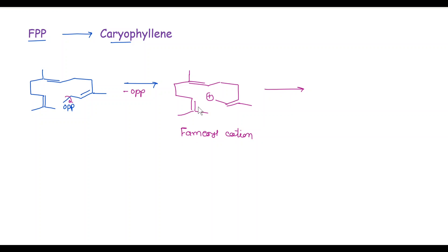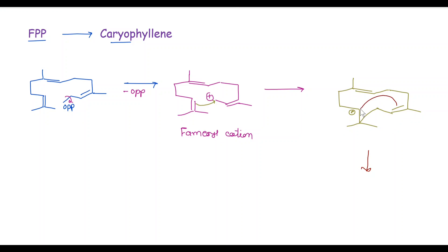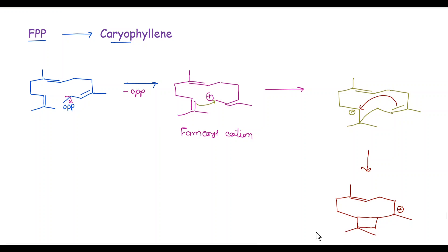In the next step, this double bond attacks on this electron-deficient carbon atom, and we get here a positive charge, here a double bond, and CH3. In the next step, this double bond attacks on this carbocation, and we get here a positive charge, here CH2, this CH3, here CH, this bond bonded to this carbon atom, and here this carbon-carbon bond. This cation is called the caryophyllene cation.